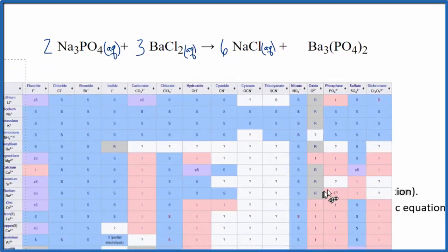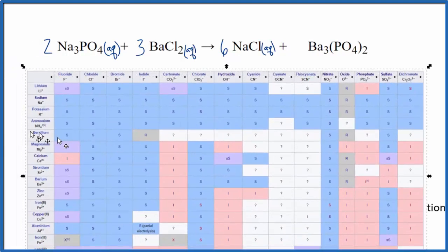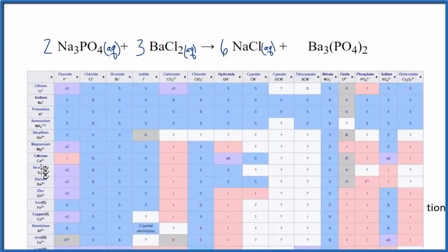From the solubility table, we look here, we're going to find barium. Barium, that is right here, Ba2+. We're going to go over here to the phosphates. So here is phosphates, and we see that I. That means it's insoluble. It's not going to dissolve in water.